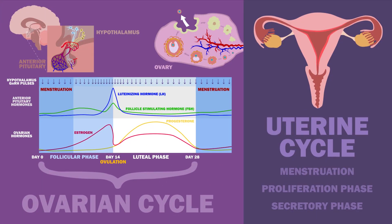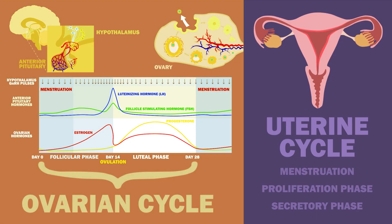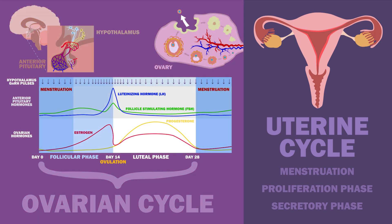The menstrual cycle can be described via the ovarian and uterine cycles. The ovarian cycle describes changes occurring in follicles of the ovary and consists of the follicular or proliferation phase, ovulation, and the luteal or secretory phase. The uterine cycle follows changes in the endometrial lining of the uterus and is divided into menstruation, the proliferation phase, and the secretory phase.